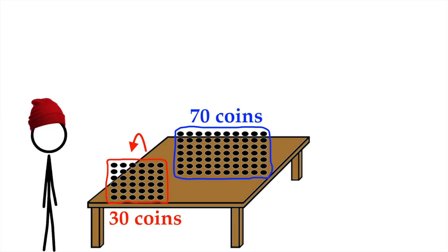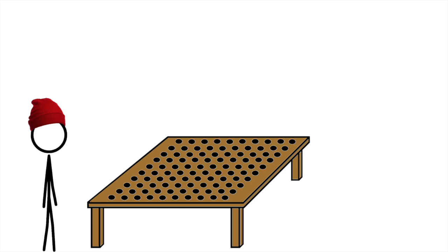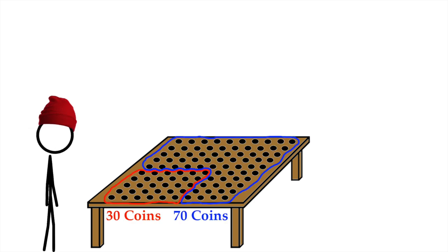What? Yes, and it's easy to prove it too. Let's reset. We begin by making two piles. Pile A with 30 coins and pile B with 70 coins.